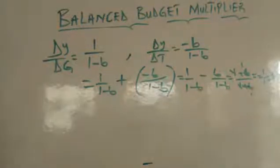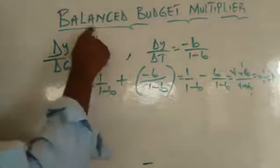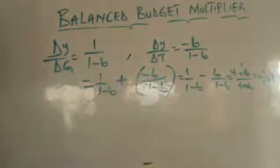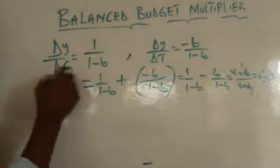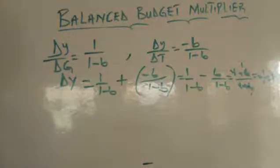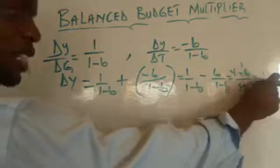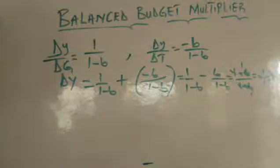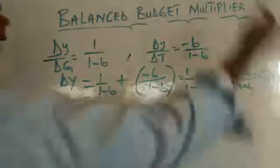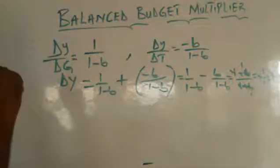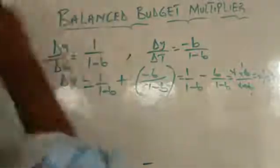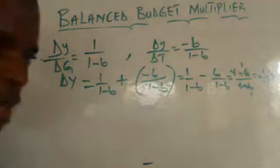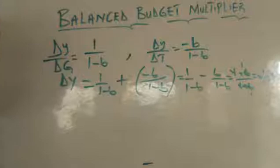So it means that the multiplier effect of a balanced budget, when injection equals withdrawal, is going to be 1. The change in income is 1 — it will not be 0, because if it is 0 it means nothing is happening in the economy. But when it is 1, there is an effect. So if you introduce $100 into the economy and also remove $100 in the name of tax, the effect is $100 multiplied by 1. So national income increases by $100 — if you had $200 before, it becomes $300.